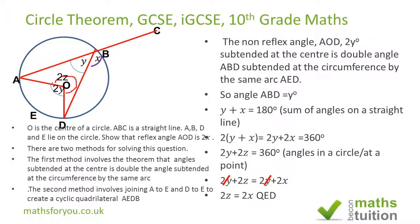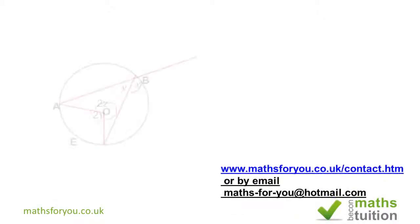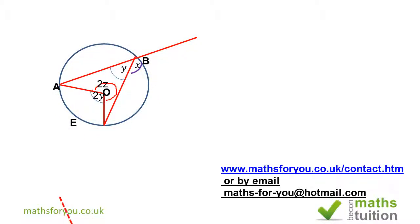Hope that makes some sense. Now for the second method — which you don't have to do — we start from where we ended up in the last slide. All we've done here is create a cyclic quadrilateral A, B, D, E. For that to be a cyclic quadrilateral, all four points must lie on the circle — and A, B, D, and E do lie on the circle.